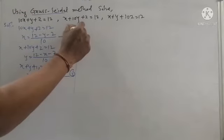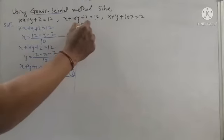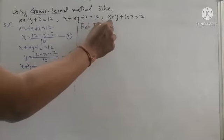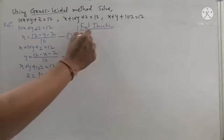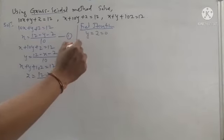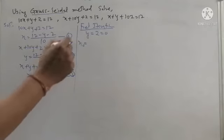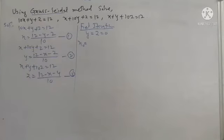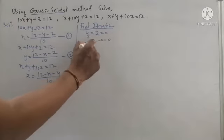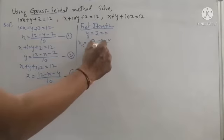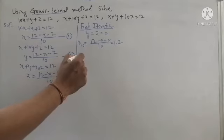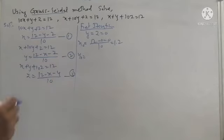Now we use the Gauss-Seidel method. In the first iteration, remember the difference between Jacobi's and Gauss-Seidel method: we take only y and z as zero to evaluate x naught. Putting y = 0 and z = 0 in equation number one on the right-hand side, we get (12 - 0 - 0) / 10 = 1.2.